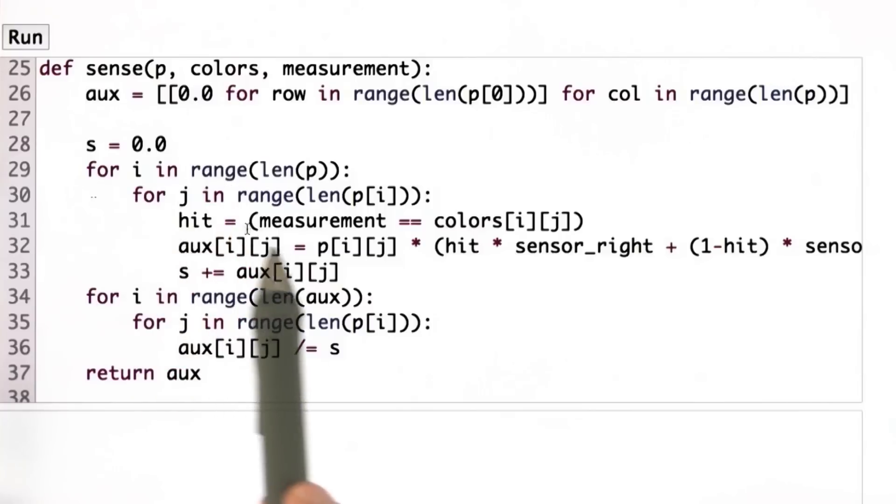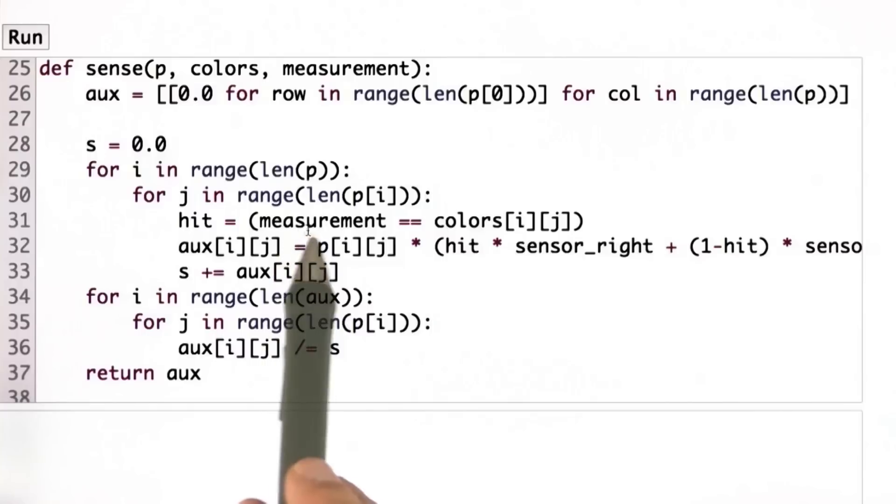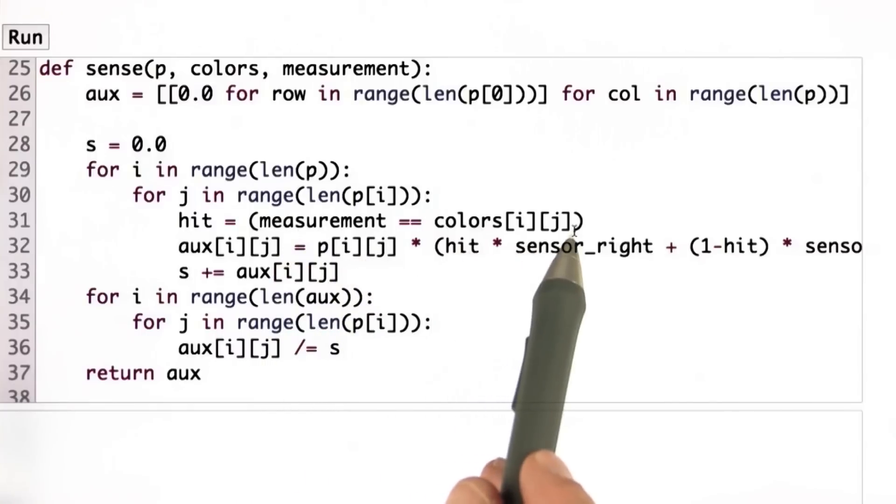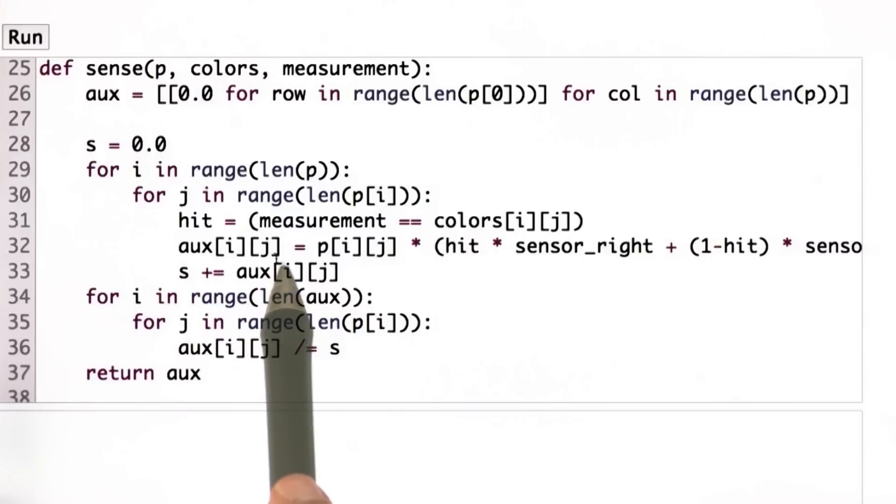In the inner loop, I now iterate over all elements in my grid cell. I compute whether the measurement matches the color in the cell, in which case I call it a hit. Now my non-normalized posterior is the prior times this big sum over here. It uses sensor_right if the measurement was correct and sensor_wrong if the measurement was incorrect.